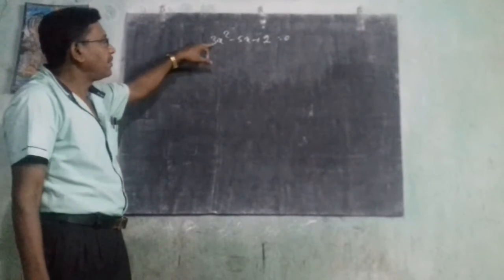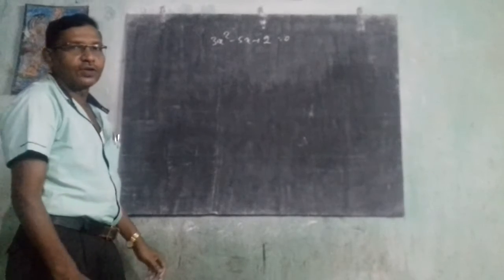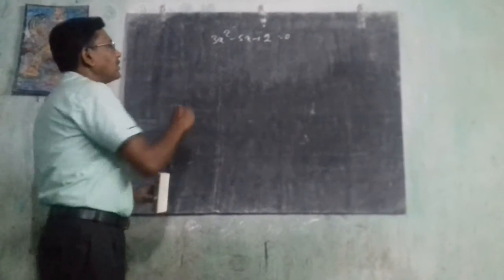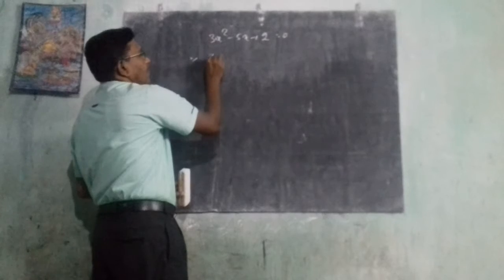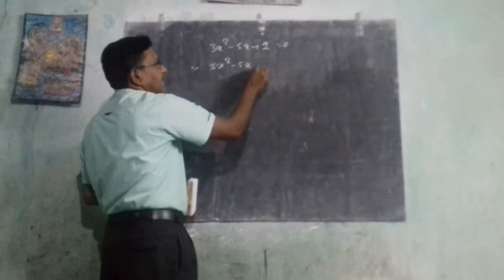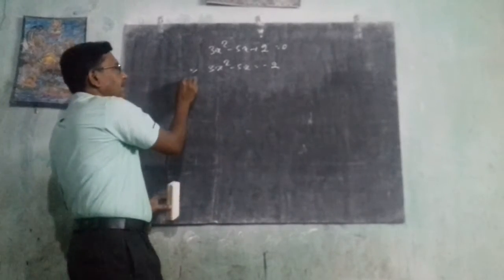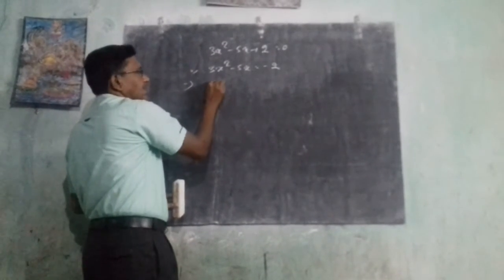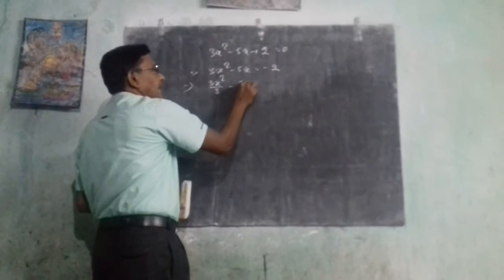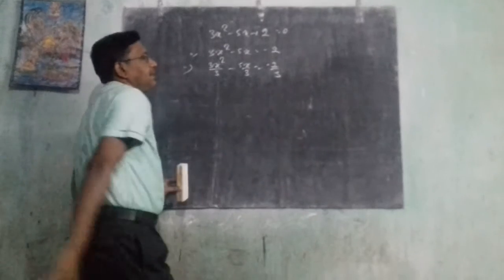Due to dividing by 3, the 3 cancels and we get x squared, which is also a square number. So, we write 3x squared minus 5x equals minus 2. Now if I divide both sides by 3, we get: 3x squared over 3 minus 5x over 3 equals minus 2 over 3.